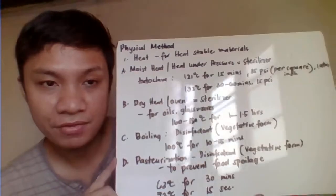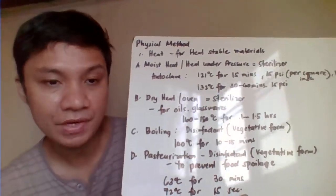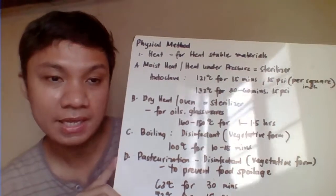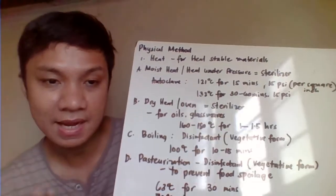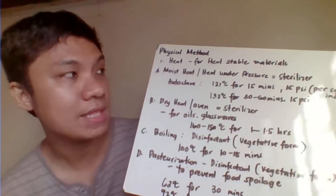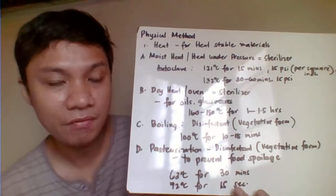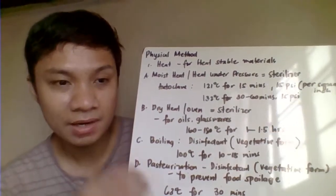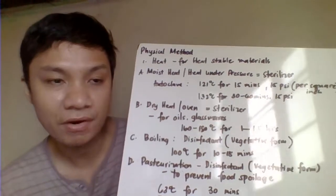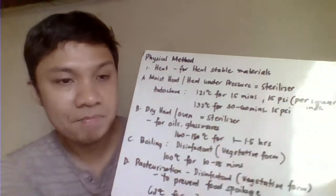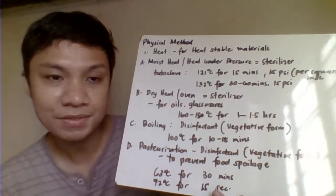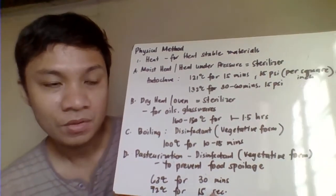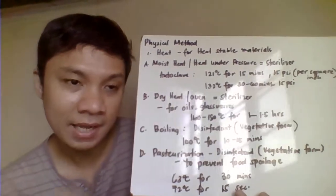Heat is used primarily for heat-stable materials. Moist heat — steam under pressure — is in the form of the autoclave, which is a sterilizer. Materials are subjected to 121 degrees Celsius for 15 minutes at 15 psi (one atmosphere of pressure). Alternatively, 132 degrees Celsius at 15 psi can be used with a sterilizing time of 30 to 60 minutes.